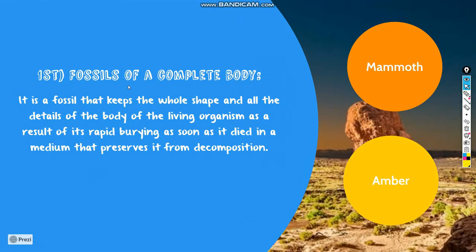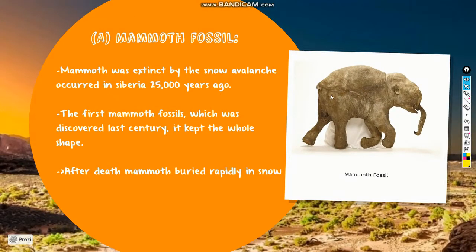A complete body fossil is a fossil that keeps the whole shape and all the details of the body of the living organism, as a result of its rapid burying as soon as it died in a medium that preserves it from decomposition. For example, the mammoth fossil, which you can see in the picture, was found last century buried in snow, and it kept the whole shape.